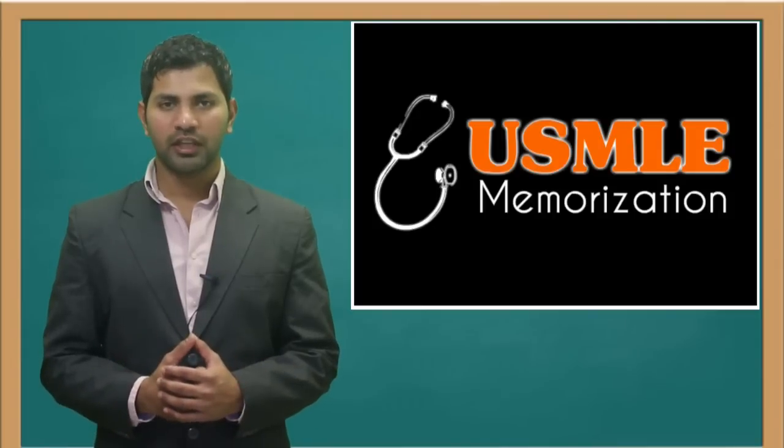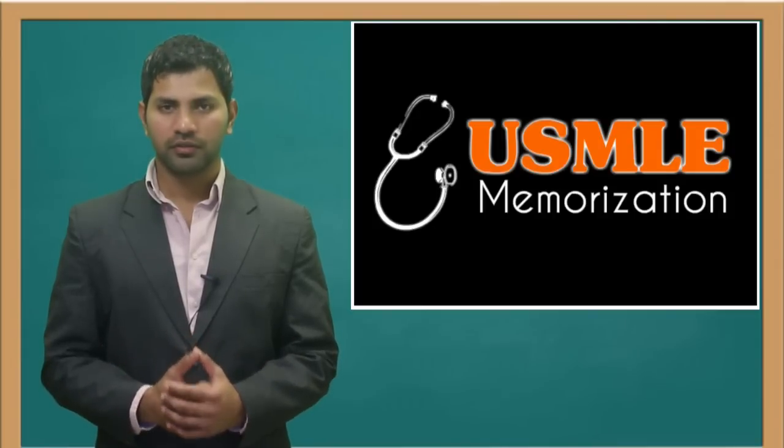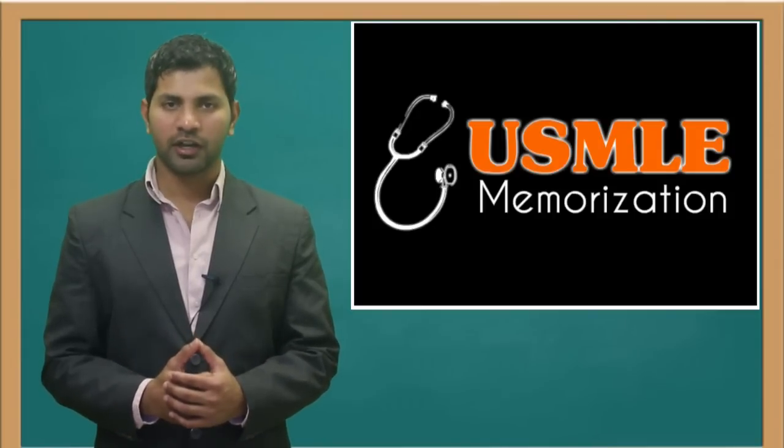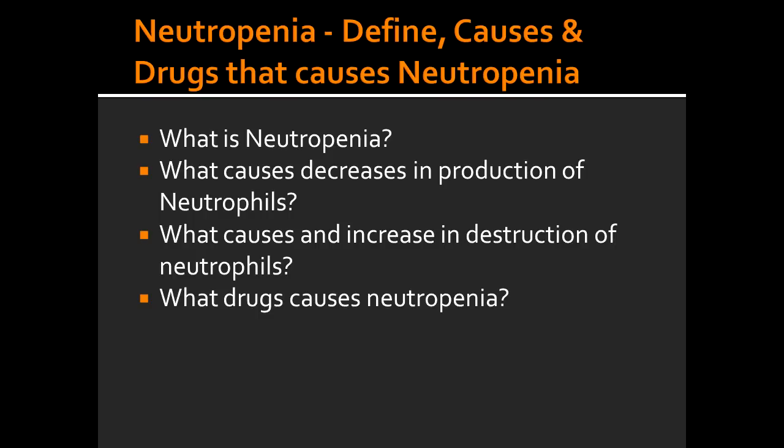Welcome to US Emily Memorizations. Today we're going to talk about neutropenia. What is neutropenia? Neutropenia is a type of leukopenia in which there is a decrease in the number of neutrophils. Neutrophils are the chief phagocytic cells.